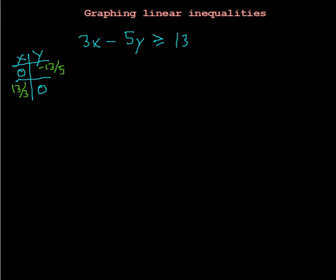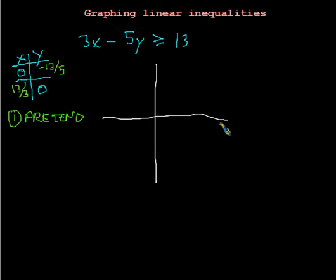Now, the procedure for graphing a linear inequality goes like this. You start off by pretending that you have an equation, because what we want to do is we want to make the graph in such a way that we have these two dots, and we'll use those two dots to draw a line, and that line will be what you would get if you had a linear equation.